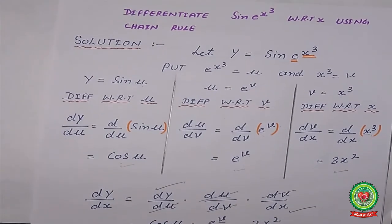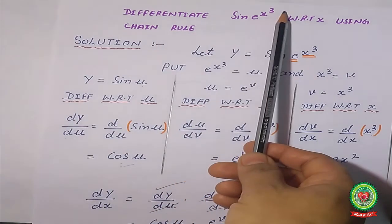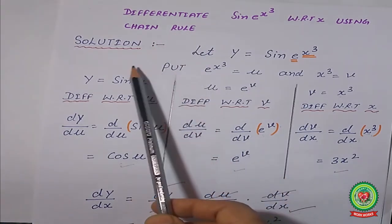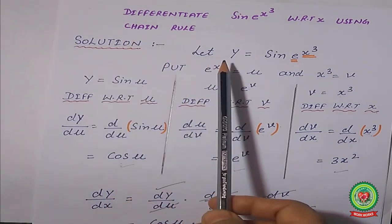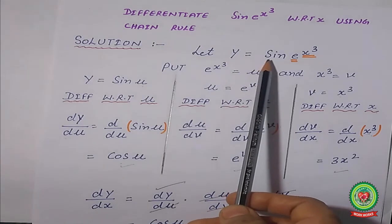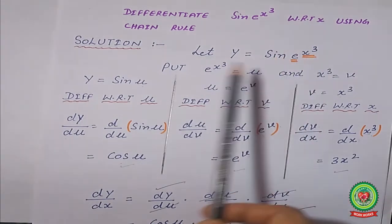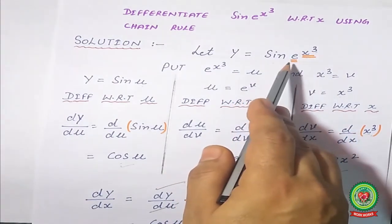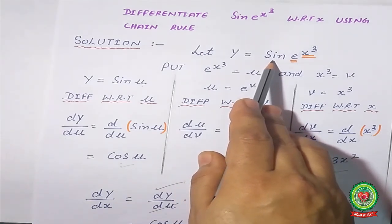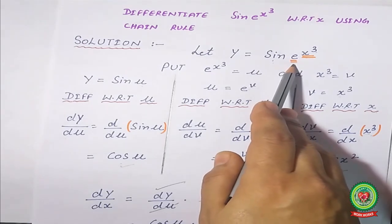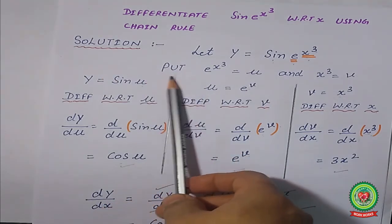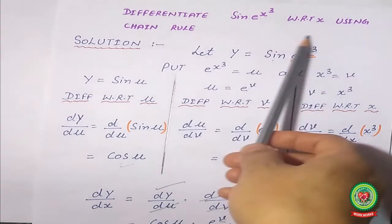Now I am taking one example that is already a combination of two or three functions. Differentiate sin(e^(x³)) with respect to x using chain rule. Since chain rule is specified, we apply the chain rule formula. Let y equal to sin(e^(x³)). This expression has three functions: sin, e raised to a power, and x³. First, put e^(x³) equal to u — the full exponent with its angle. Then put x³ equal to v.